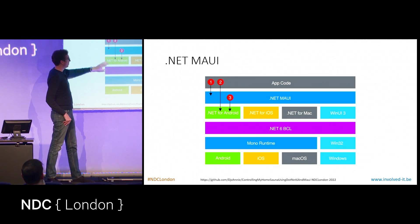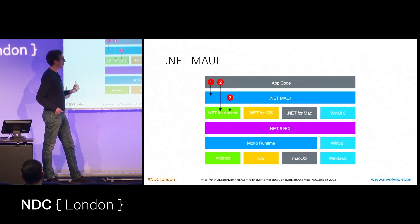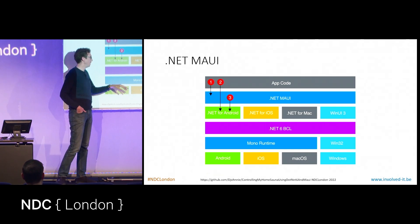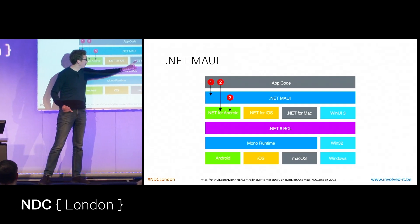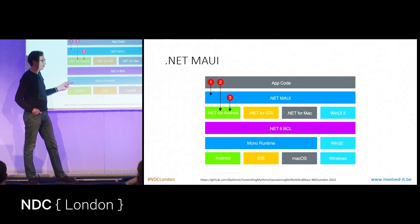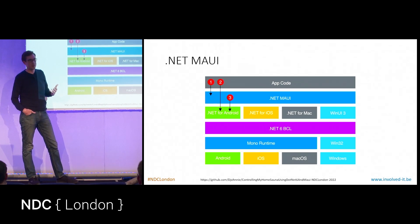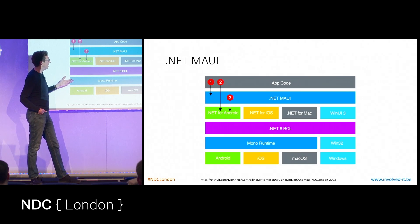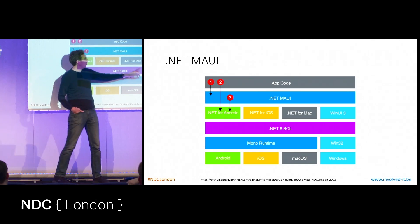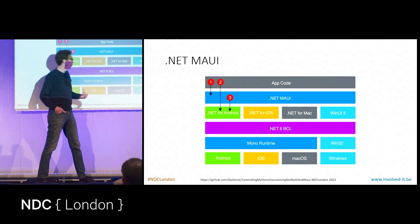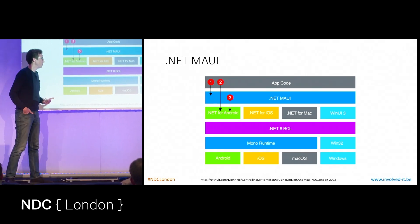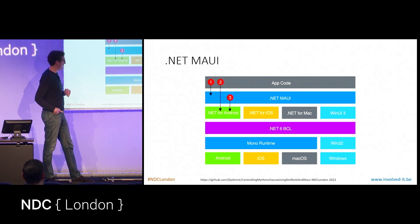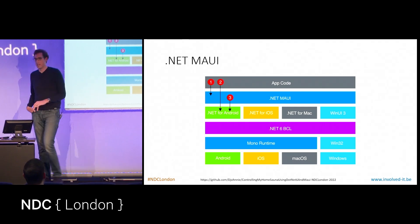This all lives on top of the .NET 6 base class library. When installed on target devices, for Mac, iOS and Android it will run the mono runtime — an implementation of the .NET runtime, which Xamarin.Forms was already using. In Windows specifically it will run native Win32 based on the Windows Win32 APIs.